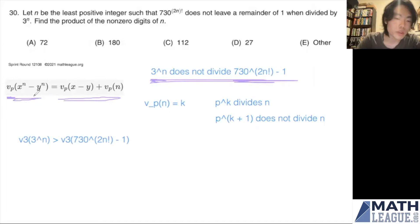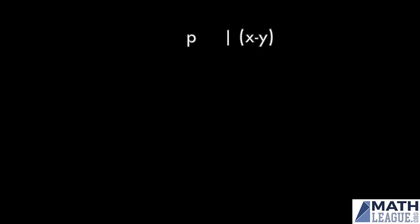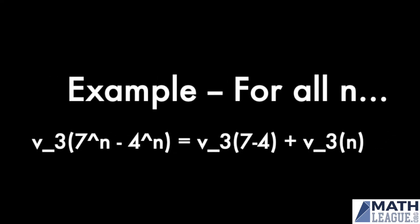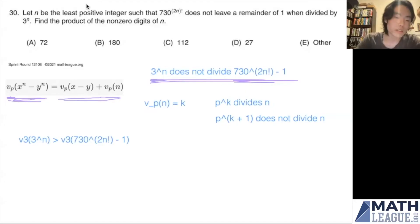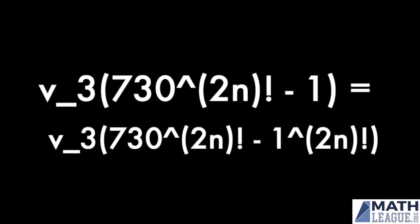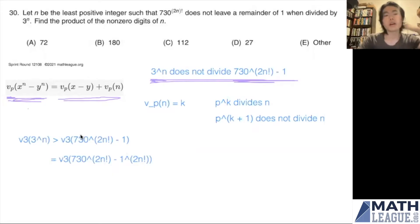LTE describes v_p of the difference of two powers, under two conditions: p must be an odd prime, and x - y must be divisible by p. For example, v_p applies for p = 3 with x = 7 and y = 4 for any n. We're considering v_3, which holds since 3 is odd. We can express 730^(2n!) - 1 with x = 730 and y = 1, substituting directly into the LTE formula.